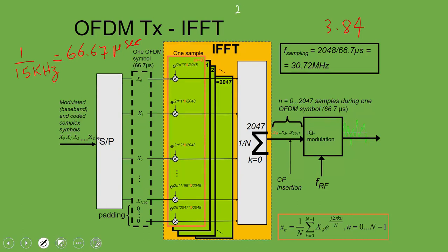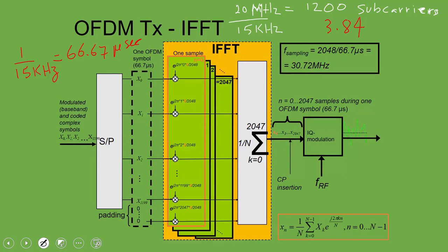For the 20 MHz channel bandwidth case: LTE uses 1200 subcarriers each of 15 kHz. You can verify this by taking 20 MHz ÷ 15 kHz, which gives a number slightly above 1200; after excluding guard bands it rounds to 1200 subcarriers.